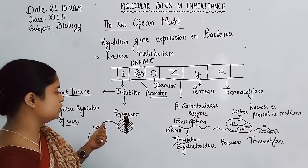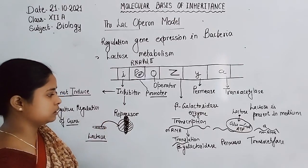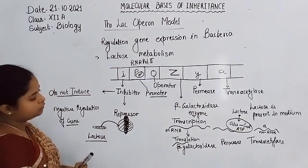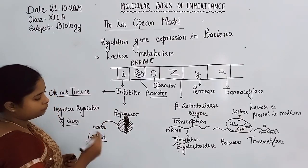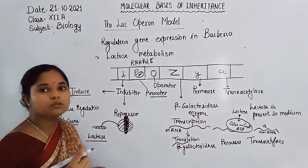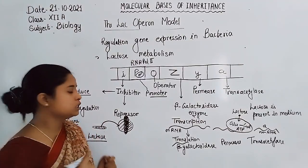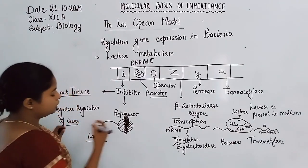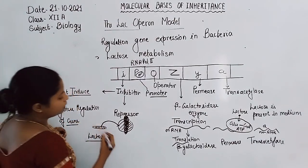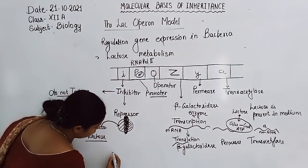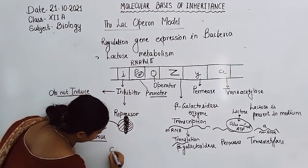After lactose binds with the repressor, the function of beta-galactosidase during lactose metabolism is to convert lactose. Beta-galactosidase breaks lactose into glucose and galactose. Lactose is a disaccharide, and glucose and galactose are monosaccharides.